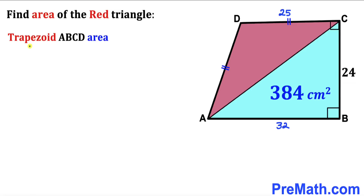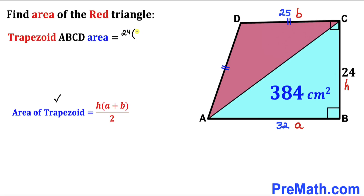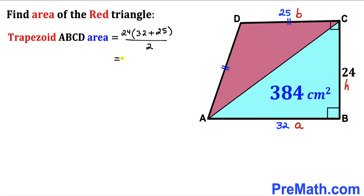Now let's calculate the area of trapezoid ABCD using the formula: Area = H × (A + B) / 2. Here H = 24, A = 32, and B = 25. So Area = 24 × (32 + 25) / 2 = 12 × 57 = 684 cm².